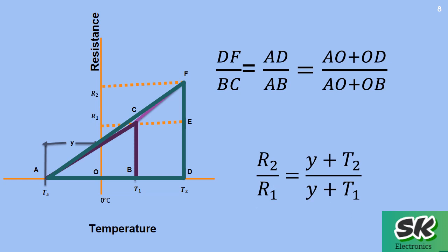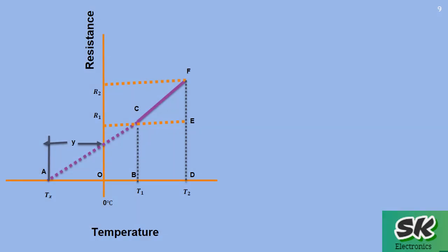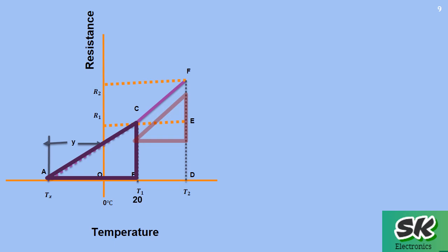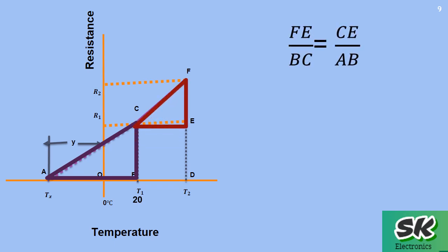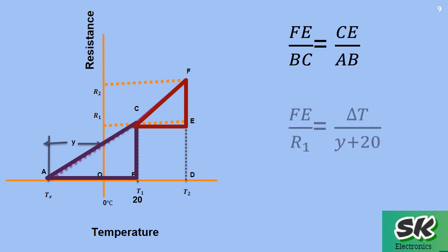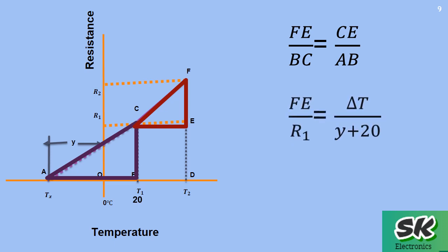This is the ratio of final resistance to initial resistance. Since resistivity is usually stated for a temperature of 20 degrees Celsius, we consider t1 to be at 20 degrees Celsius. Triangle ABC is similar to triangle CEF, so FE over BC equals CE over AB. Substituting the quantities that the sides represent: BC represents R1 and CE is delta t.